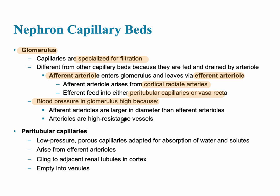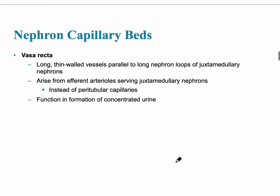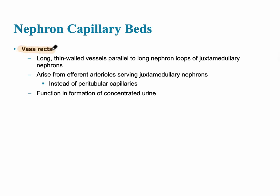The peritubular capillaries are low pressure, porous capillaries surrounding the rest of the renal tubule. The vasa recta is found in juxtamedullary nephrons, specialized for long nephron loops. These represent about 15% of all nephrons in our kidneys and specialize in the formation of concentrated urine.